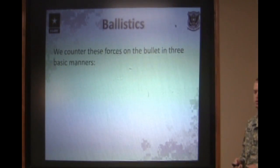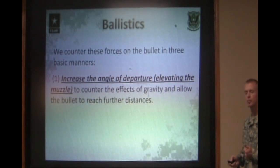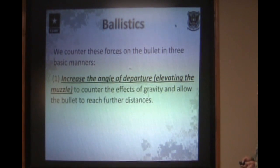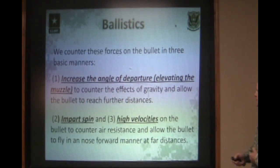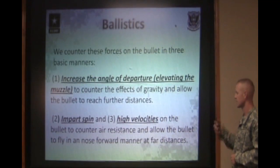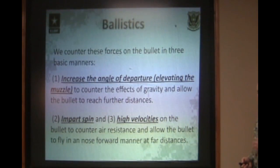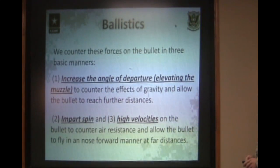We counter these two forces in three basic manners. We increase the angle of departure of the bullet, which counters the effect of gravity, allowing our bullet to fly farther before it hits the ground. We impart a high rate of spin on that bullet, which keeps it stable. And we fire the bullet at a very high velocity, which counters air resistance, allowing our bullet to fly farther and keeping it in a nose-forward manner to be stable while it flies downrange.